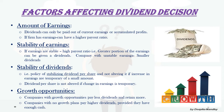Next is the stability of earnings. If earnings are stable, a high payout ratio — a greater proportion of earnings — can be given as dividends. A company with unstable earnings gives smaller dividends and keeps more as retained earnings. Many companies follow the policy of stabilizing dividend per share and do not alter that ratio if an increase in earnings is temporary or of a small amount.